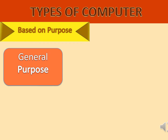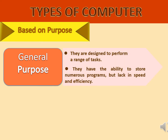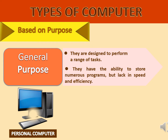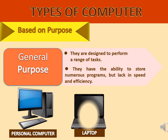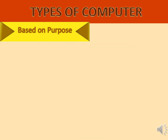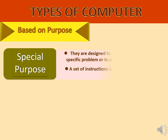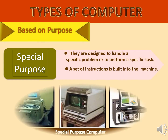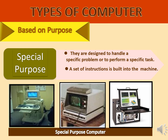General Purpose Computers are designed to perform a range of tasks. They have the ability to store numerous programs but lack in speed and efficiency. Special Purpose Computers are designed to handle a specific problem or perform a specific task. In Special Purpose Computers, a set of instructions is built into the machine.